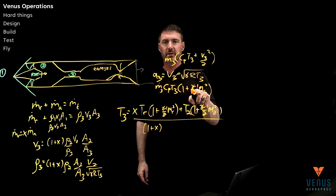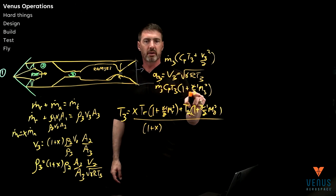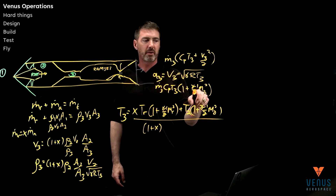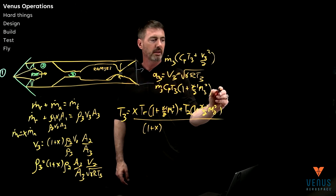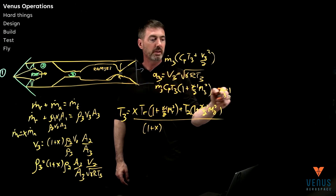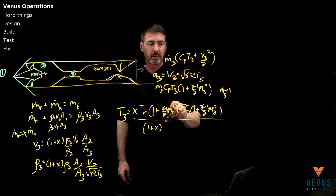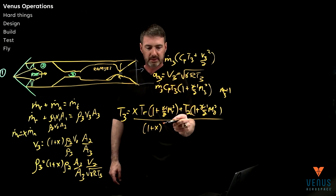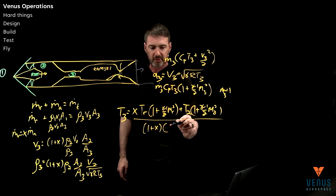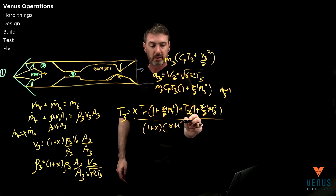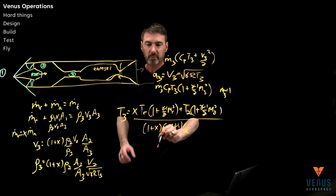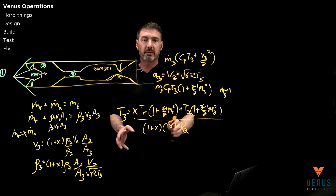I'll do one more step: since Mach 3 is actually equal to 1, I'll finish the math on that, and you end up seeing this becomes (gamma plus 1) over 2. So that's T3.